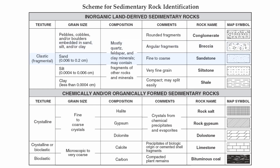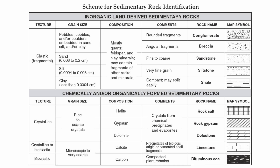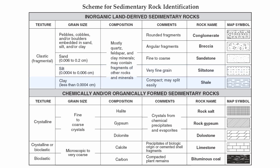Then you get sandstone, siltstone, and shale, which give you grain sizes with actual centimeter values. For instance, shale has clay-size fragments less than 0.0004 centimeters. You'll notice that the composition of all five clastic rocks is polymineralic, which simply means they're made up of a multitude — or many — minerals.